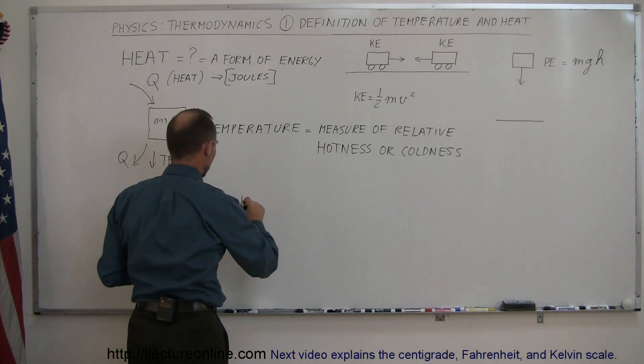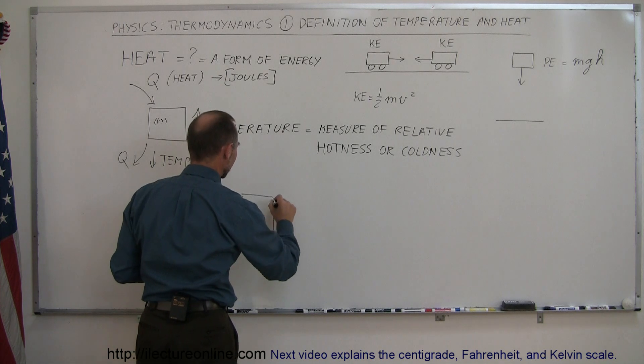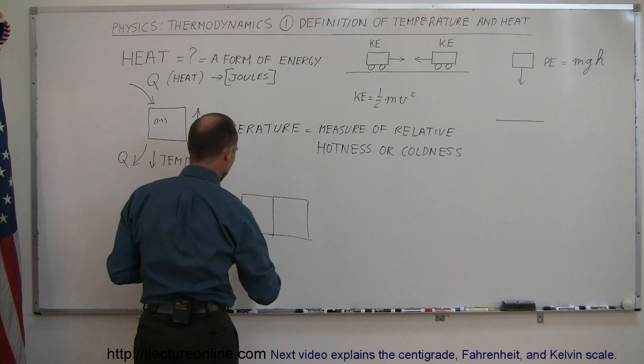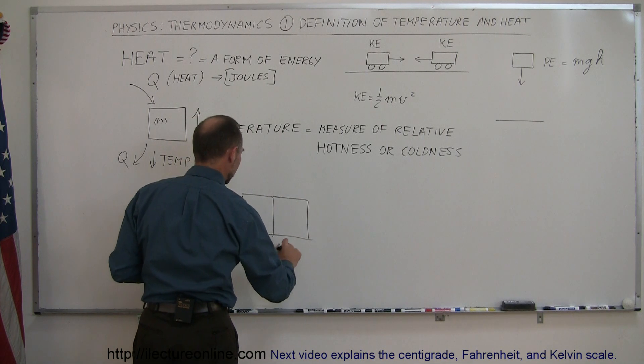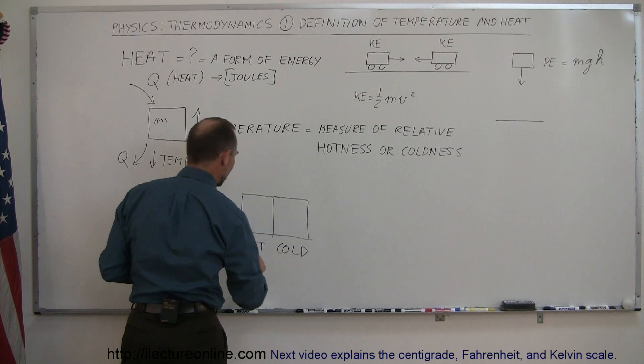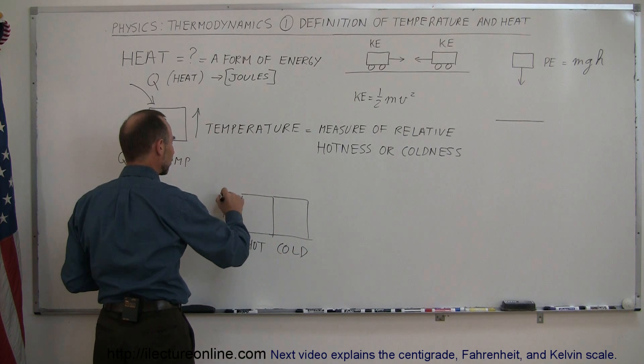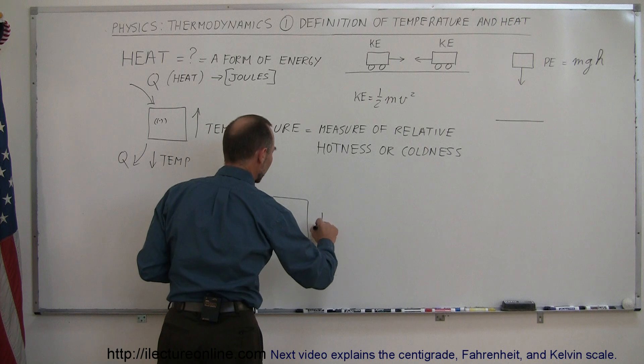Now if you take two objects and put them side by side, and let's say this is a hot object, and this is a cold object, that means that the temperature of this object is larger than the temperature of this object.